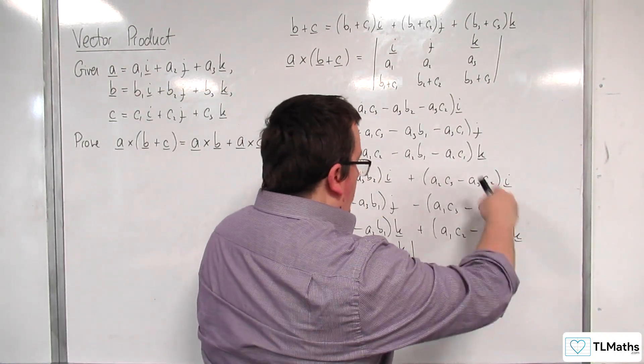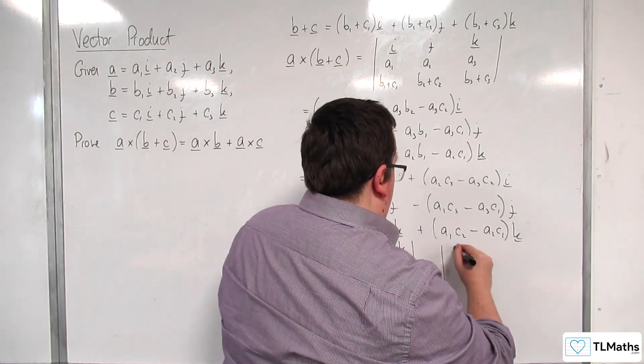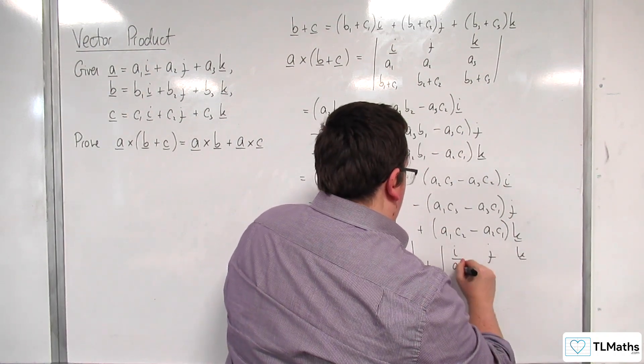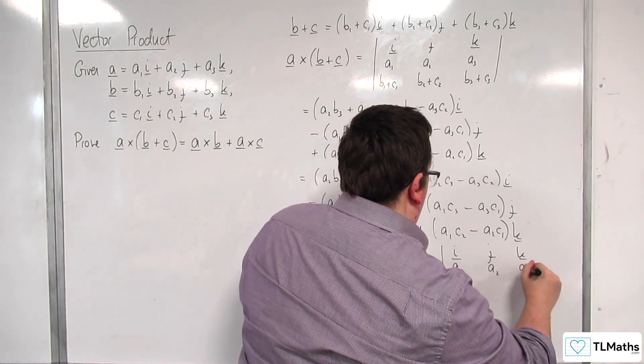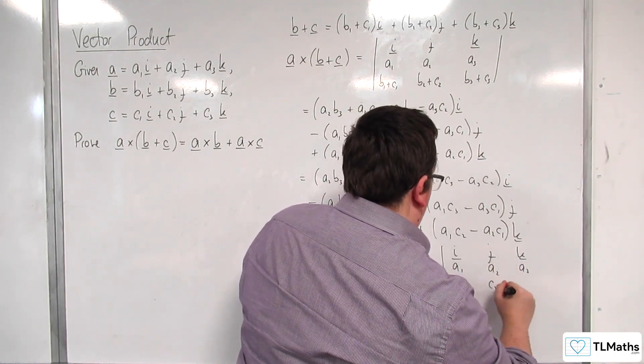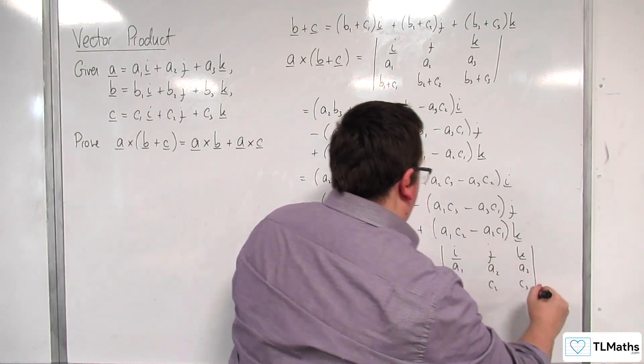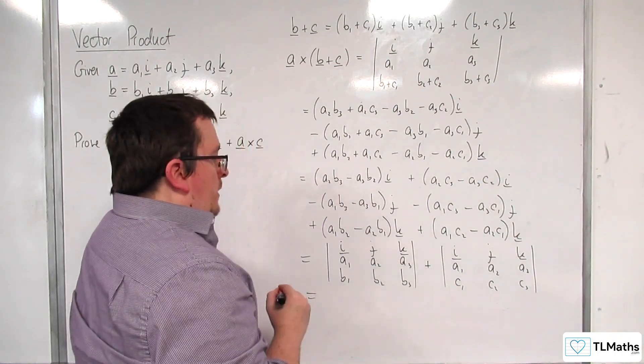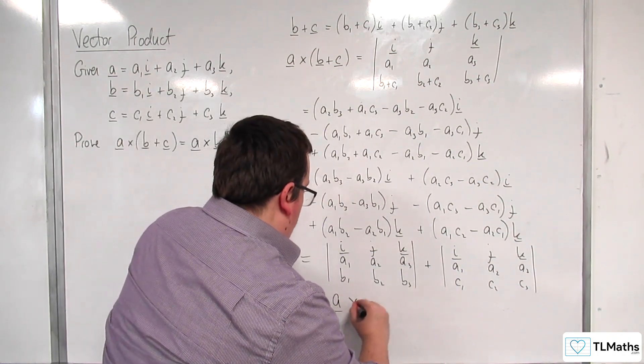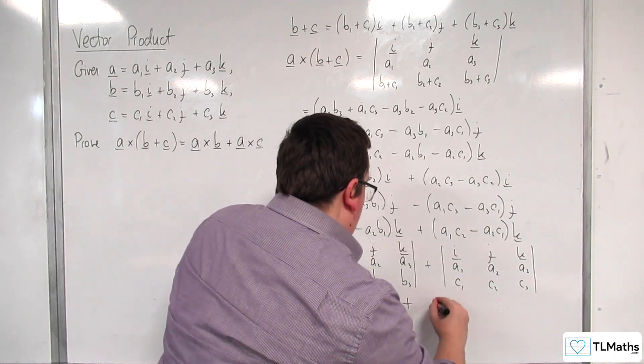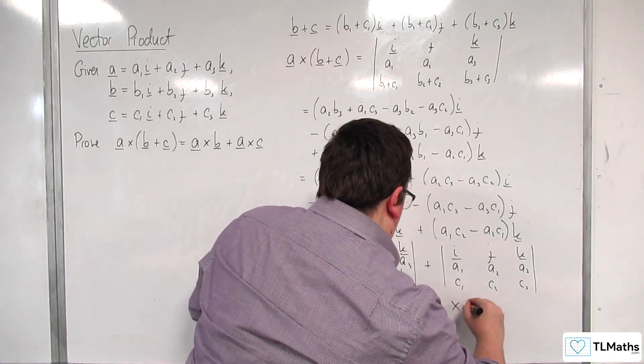And all of this is the determinant i j k, a1, a2, a3, c1, c2, c3. So I have a cross b plus a cross c.